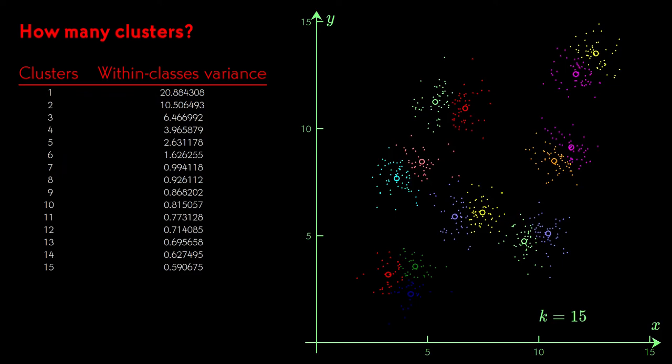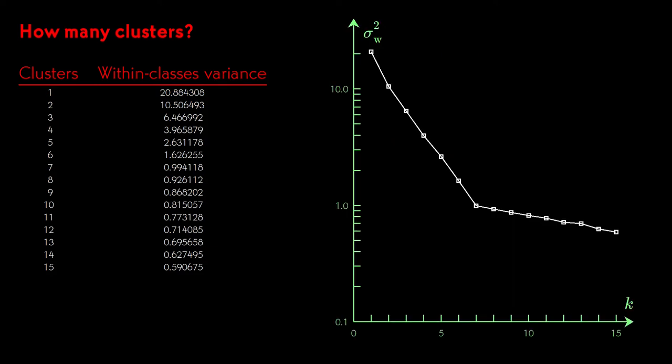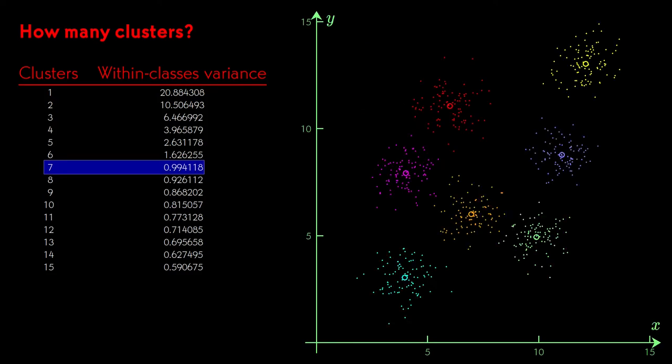We plot the achieved values for the within classes variance. Usually the behavior is easiest to see if we use a logarithmic scale for the variance. Very often there will be an abrupt knee in the curve, before which adding clusters makes a significant difference to the variance, and after which it makes a much smaller difference. This point is clearly where the returns begin to diminish. For these data, the break-over point is at seven clusters. And this matches what the eyeball sees. The data show up as seven groups when they are plotted on the plane. K-means appears to have colored them correctly.